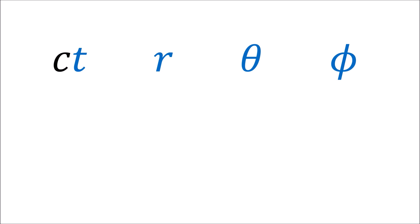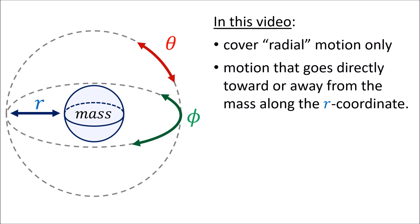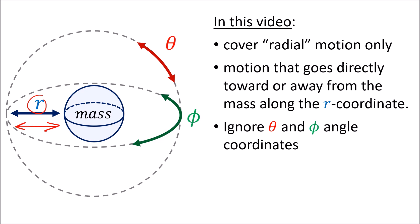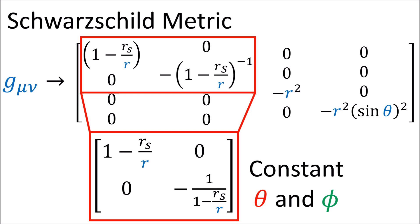We should only trust the metric tensor g to properly make measurements of time and space. Let's start by talking about the time coordinate ct and how it relates to gravitational time dilation for observers at different distances from the spherical mass. In this video, I'm only going to cover radial motion near the mass — motion that goes directly toward or away from the mass along the r coordinate. This means I'm going to ignore the theta and phi angle coordinates, and I can treat spacetime as two-dimensional, with only a time coordinate ct and a radial coordinate r.